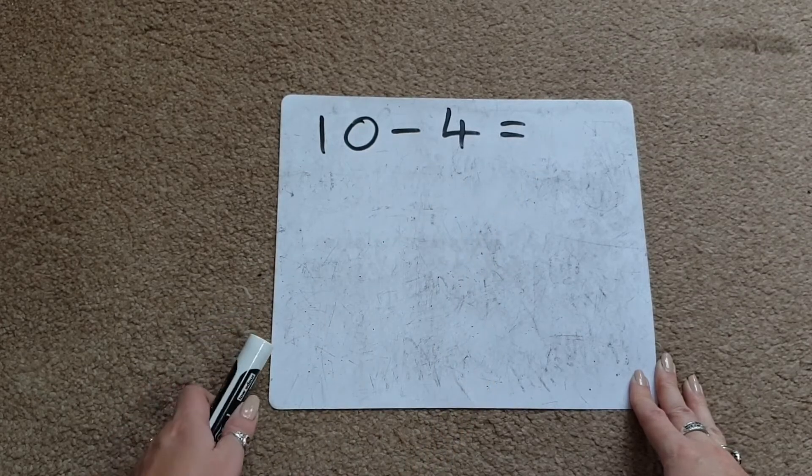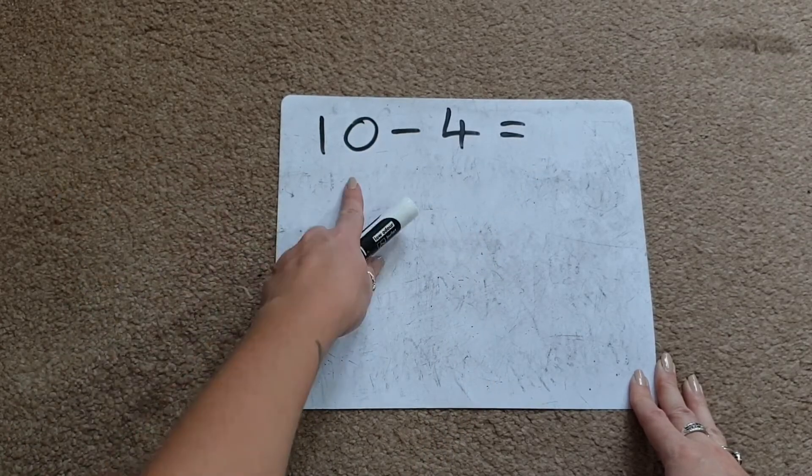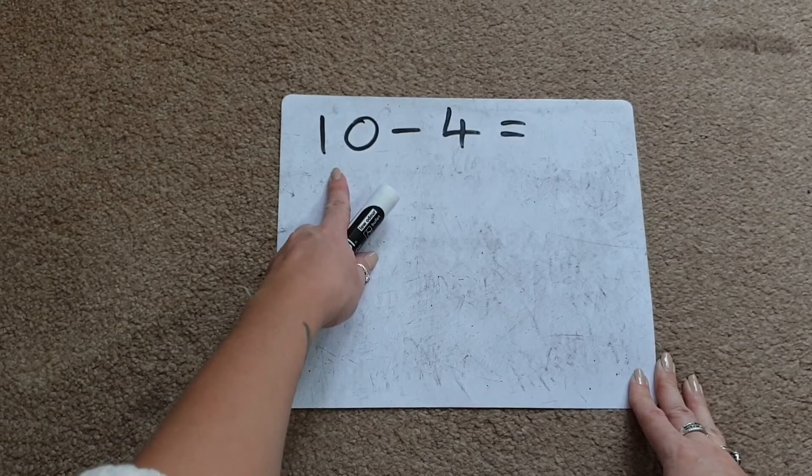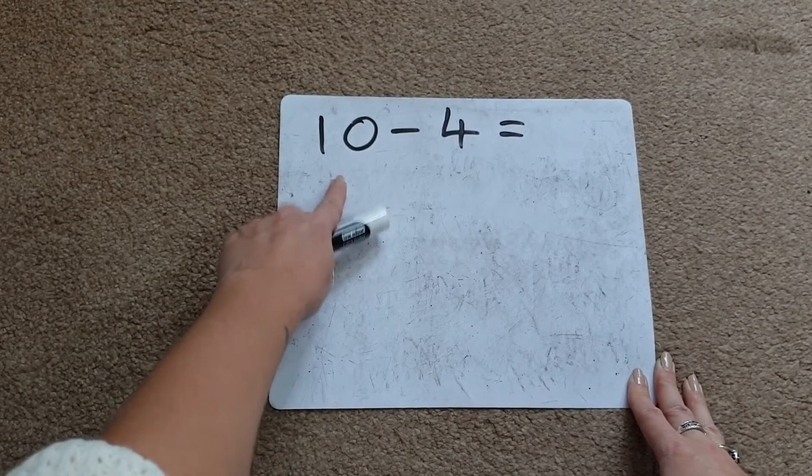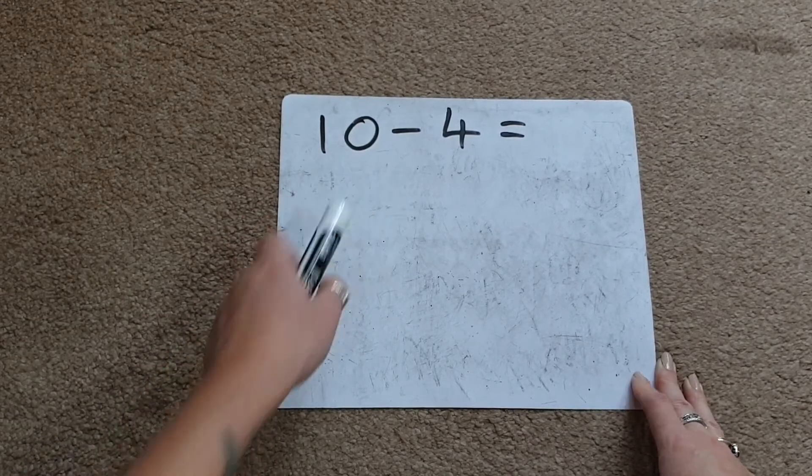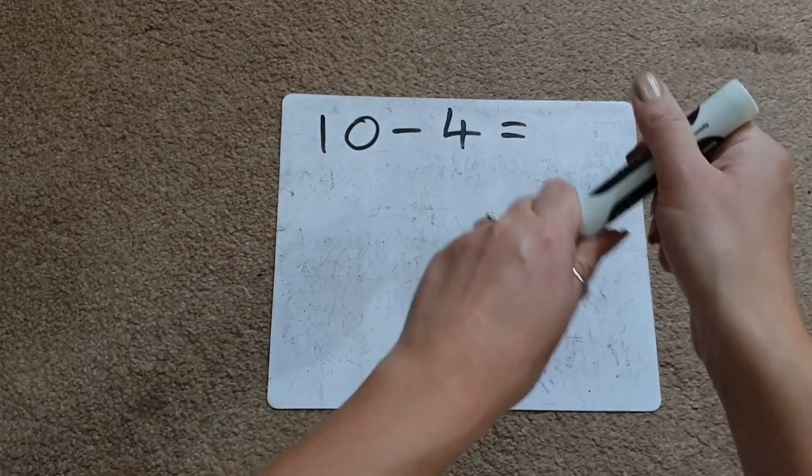So again, I'll be talking to the children about what number we're starting with, so that in a subtraction it's always going to be the biggest number, which is always going to be the first number in the calculation. And instead of counting out 10 objects, we're going to draw 10 things. So this time I'm just going to draw 10 circles.